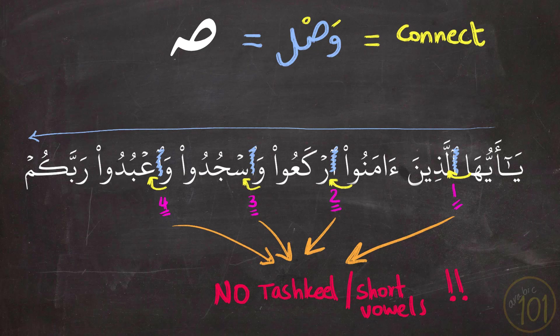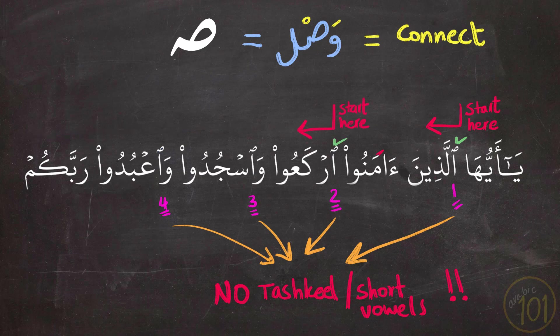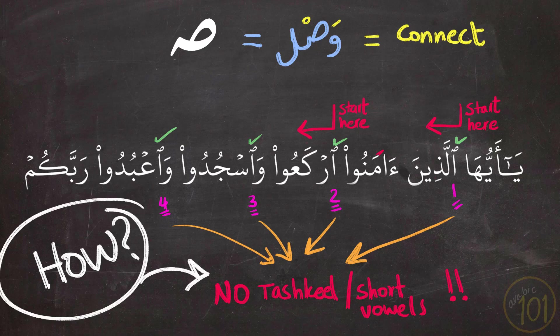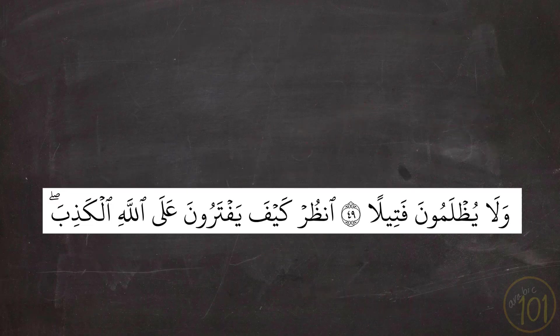This solution — connecting Hamzat Wasl with what comes before it — is a very good solution. But what if you want to start at a particular word, which means you will have to pronounce Hamzat Wasl? Or if you want to start at another word, or if Hamzat Wasl came at the beginning of an ayah — it's much less likely you'll connect it, since we usually stop at the end of an ayah and start at the beginning. How are you going to pronounce this Hamzat Wasl then?